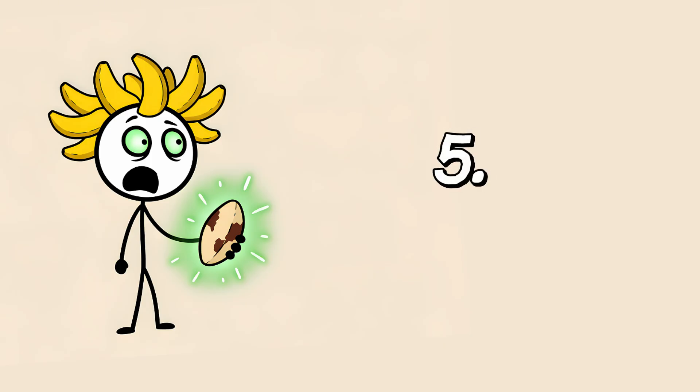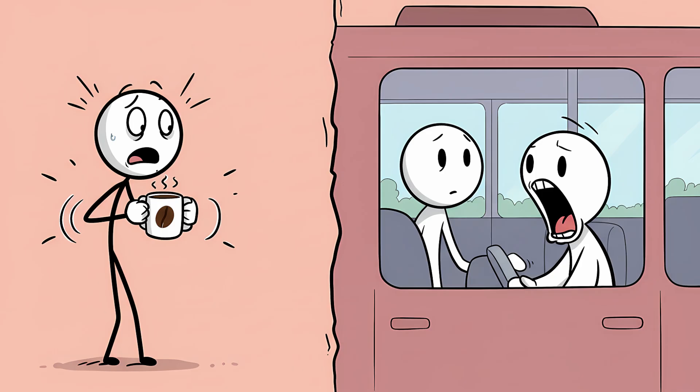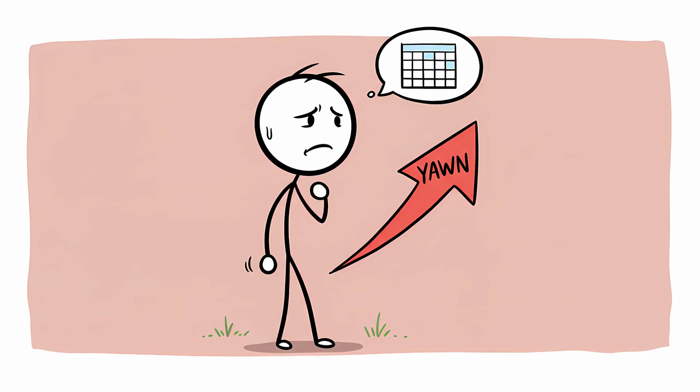Number five, the sympathy yawn. Nothing reveals the deep, primal monkey-see-monkey-do nature of your brain quite like a yawn. You can be wide awake, fully caffeinated, and ready to run a marathon. But if you see someone else on the bus let out a big, satisfying yawn, it's over. You feel an unstoppable urge bubble up from the depths of your being. You fight it. You clench your jaw. You try to think about spreadsheets. But it's no use. You're going to yawn, too.